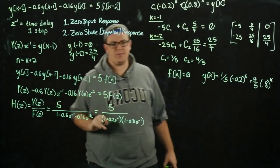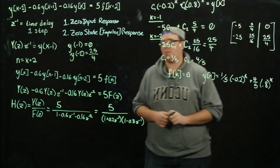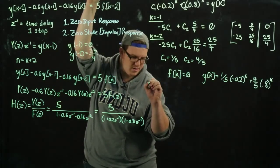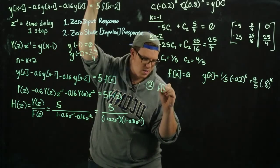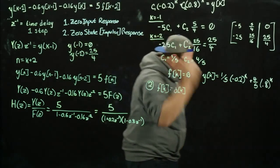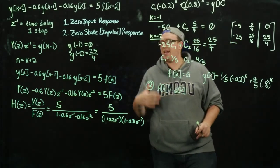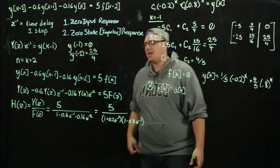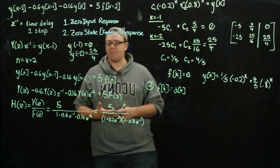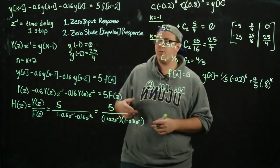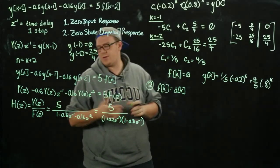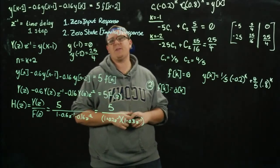Now we want to work with our zero state response, also called the impulse response, where f of k equals the delta function delta k. Just as the inverse Laplace transform of a transfer function gives the impulse response in continuous time, the inverse z-transform of the transfer function H of z gives the impulse response in the discrete time domain.